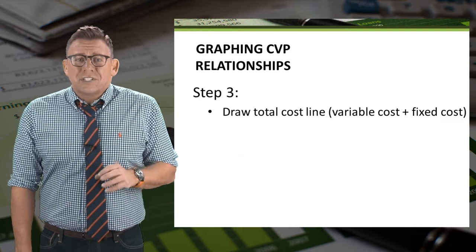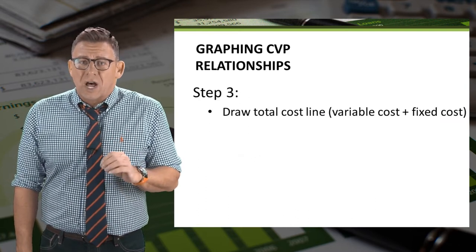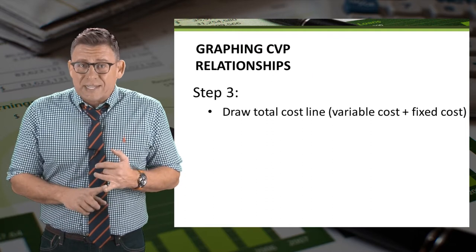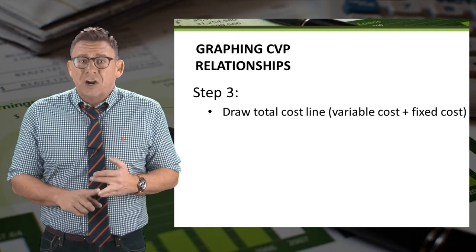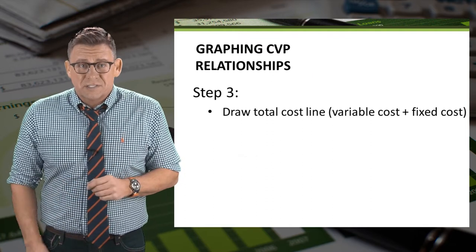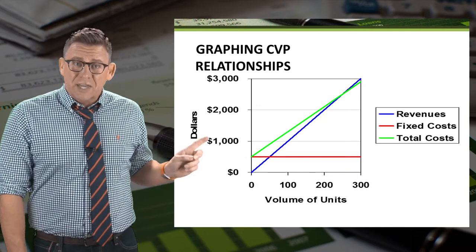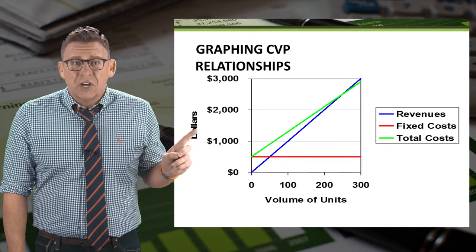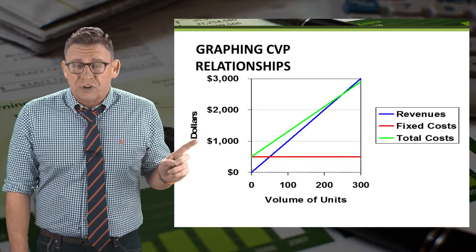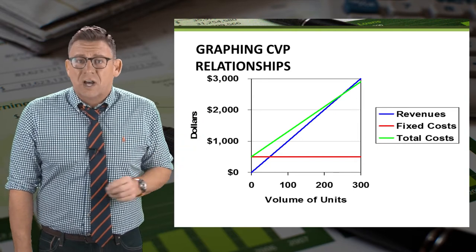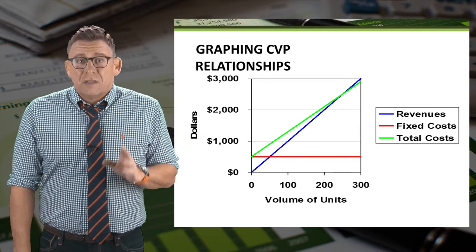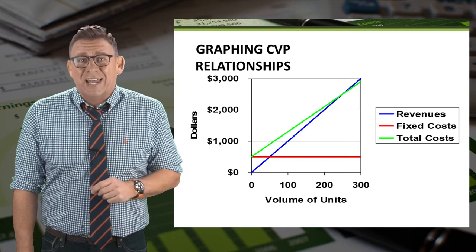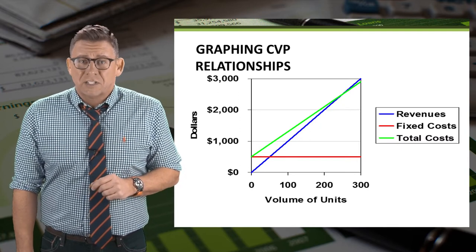The third step is to draw the total cost line. The total cost is variable costs plus fixed costs. It looks like this. Notice that it doesn't start at the origin, but rather at the fixed costs. This is because fixed costs are incurred even if we had zero sales volume.